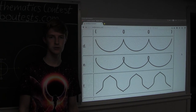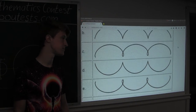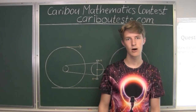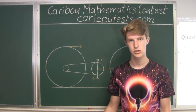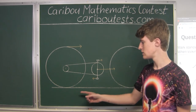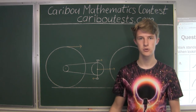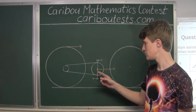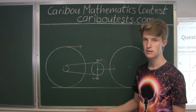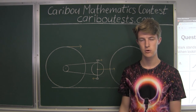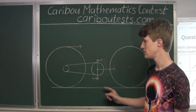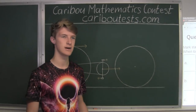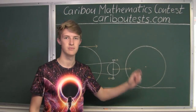Therefore, the only option that works is option A. The key to solving this problem was realizing that you could split up the complicated motion of Jim's right foot in relation to the street into two simpler motions: the circular motion of Jim's right foot in relation to the bike frame, and the uniform straight line motion of the bike frame in relation to the street. If you'd like to know more about this contest, please visit our website at cariboutests.com.